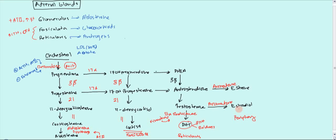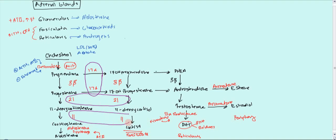Now let's talk about some of the diseases associated with these enzymes. The key enzymes where you have problems are 17-alpha-hydroxylase, 21-hydroxylase, and 11-beta-hydroxylase. A deficiency in any of these enzymes will cause shunting of the pathway.